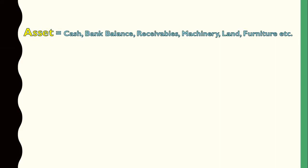Assets which you hold for less than one year are the short-term assets. Cash, bank balance, and accounts receivable are short-term assets. The assets that you hold for more than one year are called long-term assets. Machinery, land, and furniture — you are going to be holding these assets in your company for more than one year. These are called long-term assets.